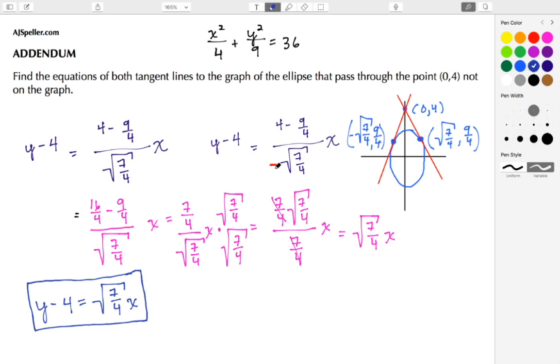Notice the one with the negative slope is just a negative here, so it's going to be the same thing except the sign's going to change. So the other one is going to be y minus 4 is equal to negative the square root of 7/4 times x.